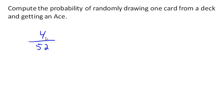or 1 thirteenth, or if you wanted it in decimals, you could say .0769, or about 7.69% probability or chance of randomly drawing a card from the deck and getting an ace.